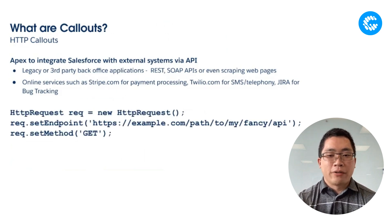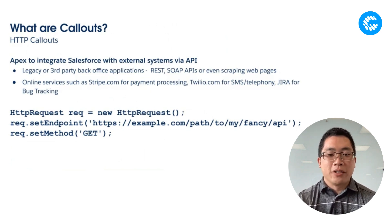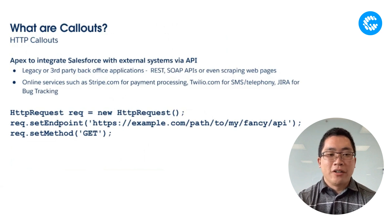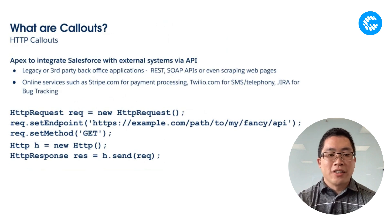Here are three lines of code that should be very familiar to many Apex developers — a simple callout from within an Apex class to a fancy API at example.com. It's pretty straightforward: set the endpoint, set the method, define the request, construct it, get it ready, and hit send.